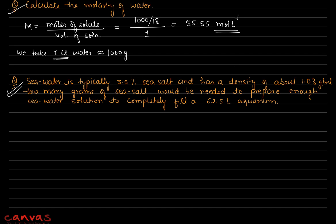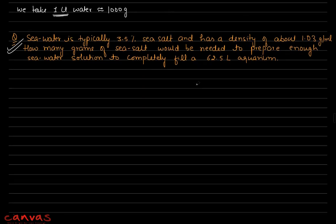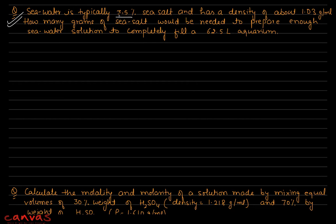Next question: sea water is typically 3.5% sea salt and has a density of about 1.03 g/mL. How many grams of sea salt are needed to completely fill a 62.5 liter aquarium? The percentage given is 3.5% — since sea salt is a solid solute, we treat this as weight by weight by default. So 3.5% w/w means 3.5 g of salt in 100 g of solution.